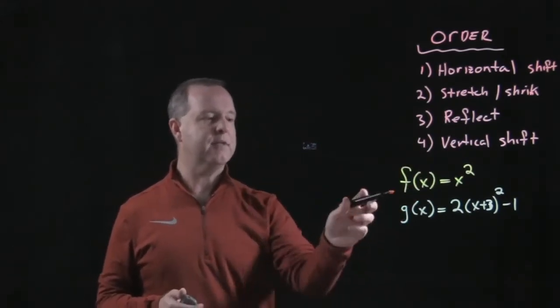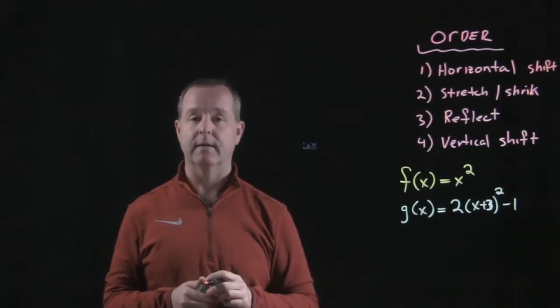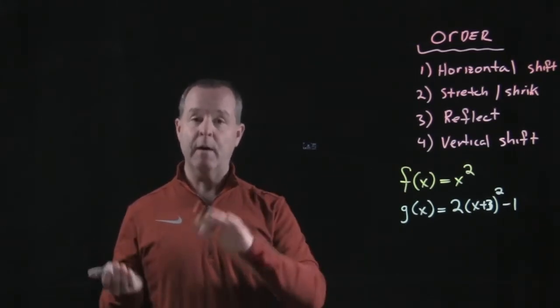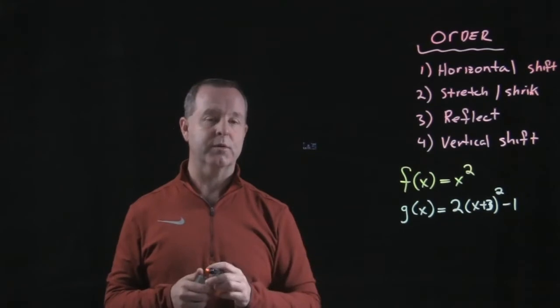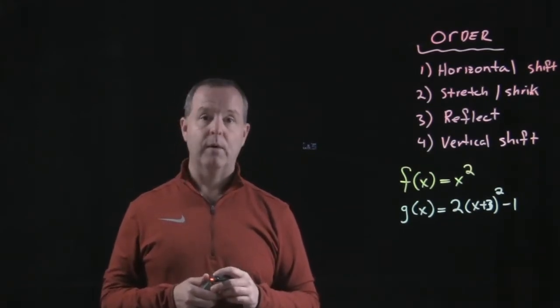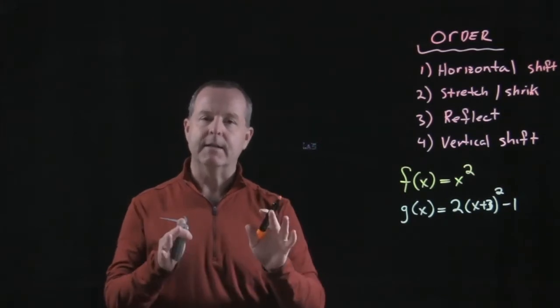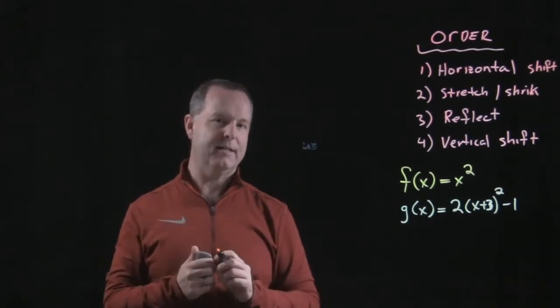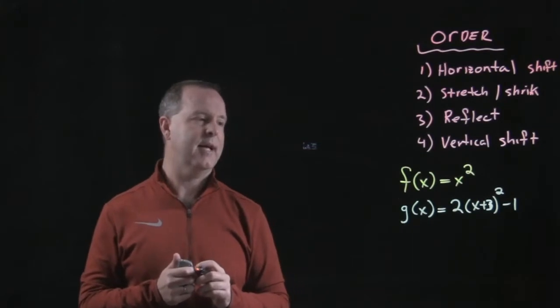So let's imagine I have some f(x) = x² and I want to obtain from that graph g(x) = 2(x+3)² - 1. Woo, a lot of work. But if we just take it step by step maybe we will have some success here.